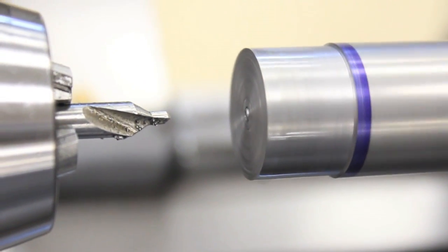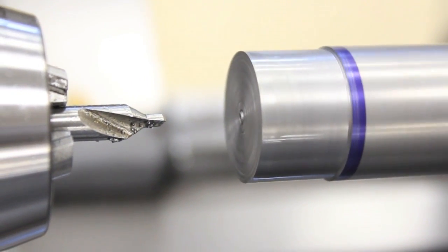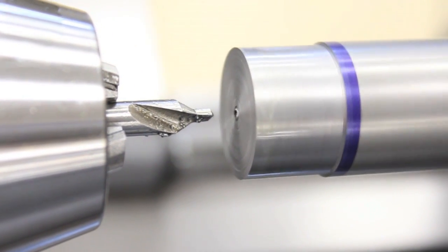Center drilling involves drilling at the center of a desired location. On a lathe, this location is located on the center line of the spindle.